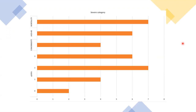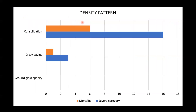In the severe category, out of the 19 patients included: 2 had a QSOFA score of 0, 4 had a score of 1, 7 had a score of 2, and 6 had a score of 3. Comorbidities were present in 4 patients, age more than 40 years was seen in 6 patients, and mortality was seen among 7 patients. In terms of density pattern, 3 patients showed predominantly crazy paving pattern — with mortality in 1 — and 16 patients showed consolidation, with mortality seen in 6 patients.